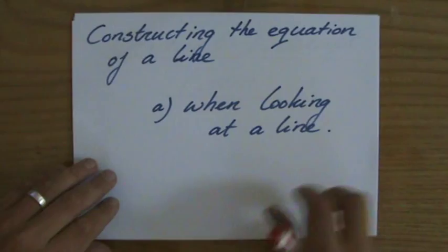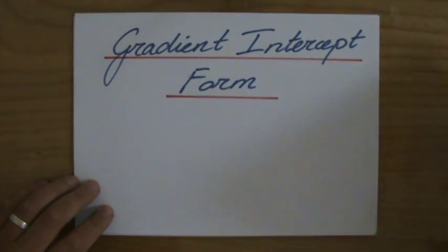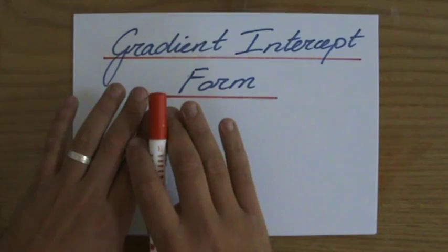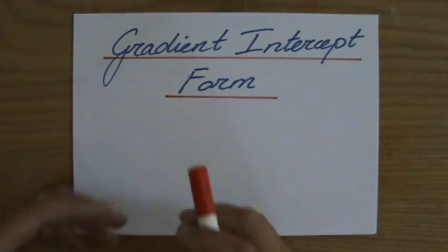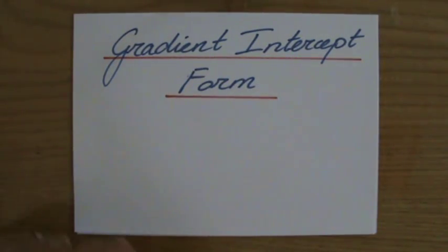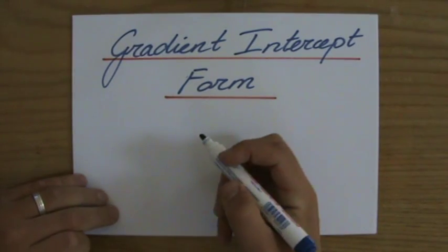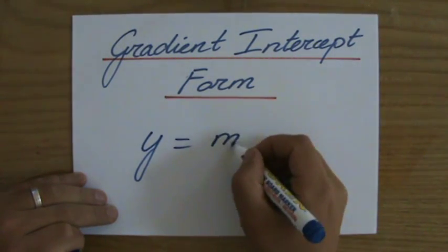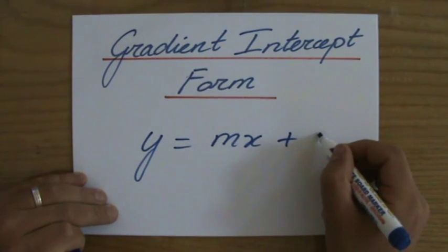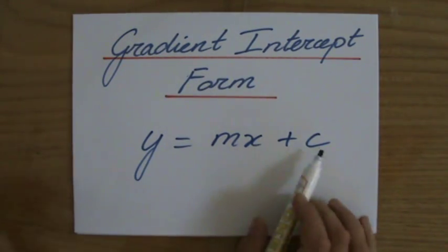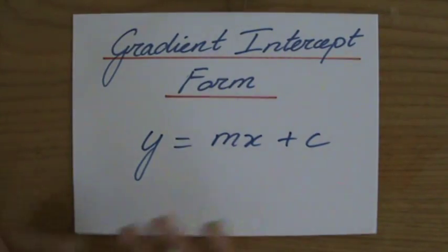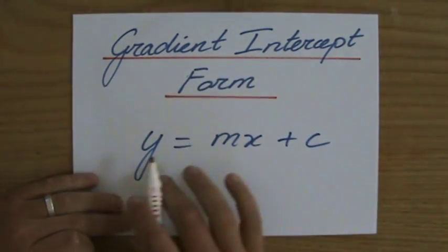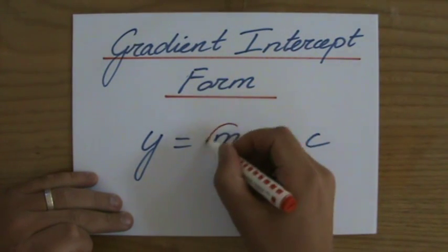Now just a quick revision of what we already know. In one of my previous videos, I've spoken about the gradient intercept format, the general equation of a line, and we discovered that together looks like y equals mx plus c. Now perhaps you have ax plus b or cx plus z. It doesn't matter as long as you realize that the gradient intercept form is y equals mx plus c.